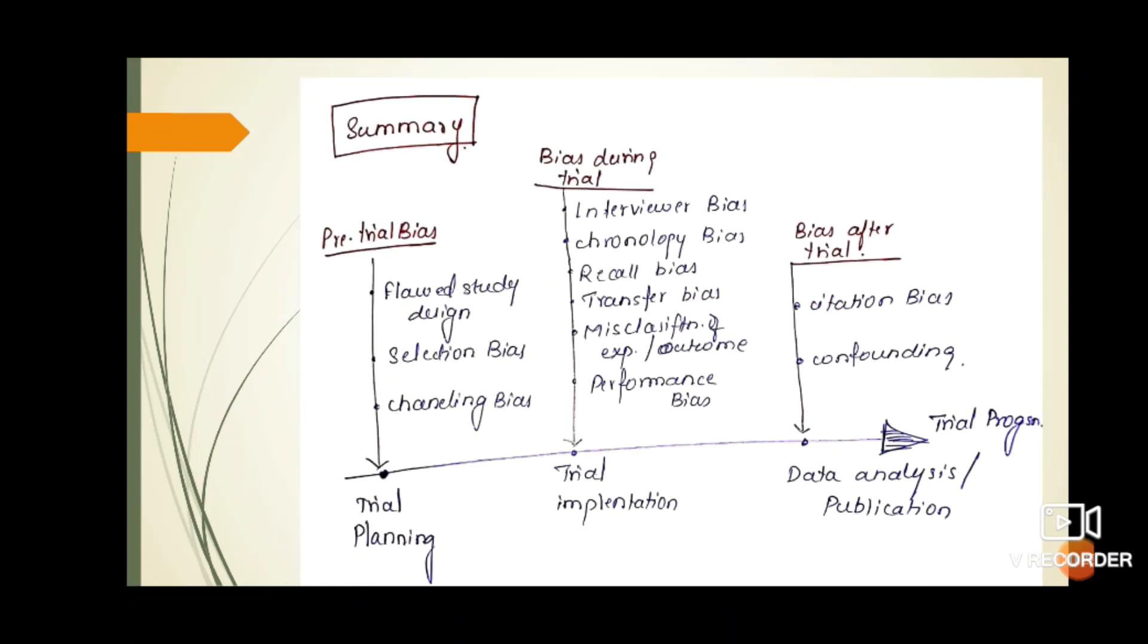In this session, we've learned of pretrial bias, bias during trials, and bias after trials. Pretrial bias includes flawed design bias, selection bias, and channeling bias. During the study we may experience interviewer bias, chronology bias, recall bias, transfer bias, misclassification of exposure or outcomes, and performance bias. After the trial, we may encounter citation bias and confounding bias, which we have to be aware of to avoid in our study.